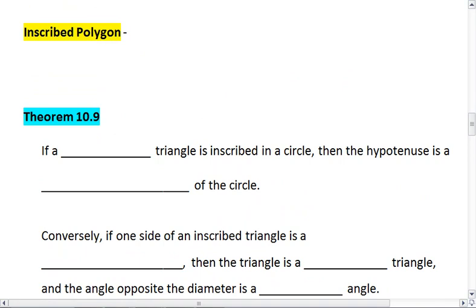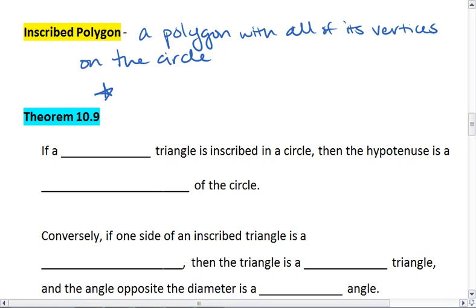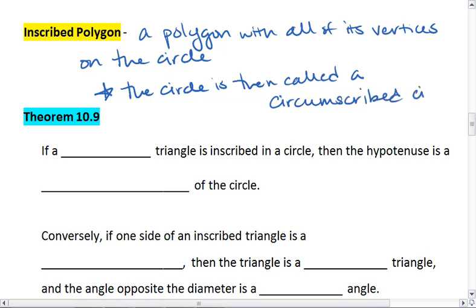This brings us now to an inscribed polygon. An inscribed polygon is a polygon with all of its vertices on the circle. And then special point of note, the circle is then called a circumscribed circle.